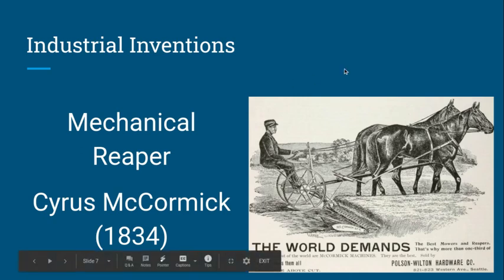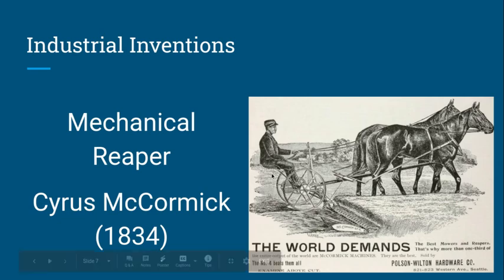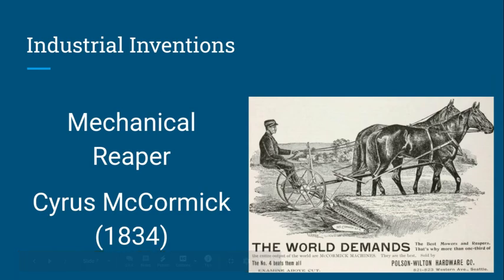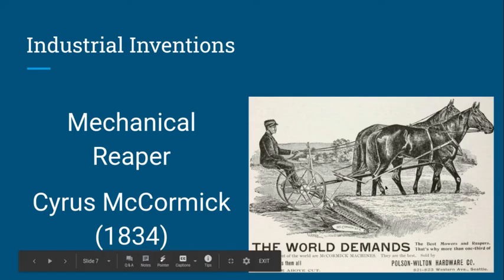Another industrial invention related to natural resources is the mechanical reaper by Cyrus McCormick in 1834. This was an even bigger technology advancement because it would allow you to harvest grain at a much quicker rate. You could cover an entire farm in one day versus tackling it in different sections or acres over multiple days. So you were able to harvest grains much faster, and it was also easier and less labor intensive.